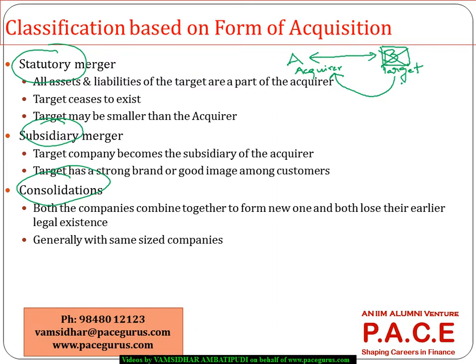In most cases the target is smaller than the acquirer, but in some cases the target itself is bigger — something like a reverse merger. The basic aspect of a statutory merger is that the target company ceases to exist, and only the acquiring company exists legally.